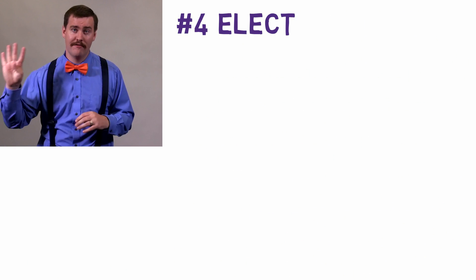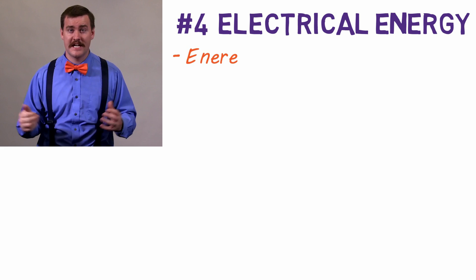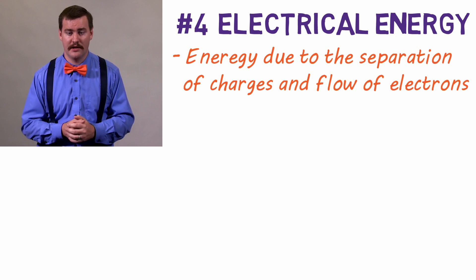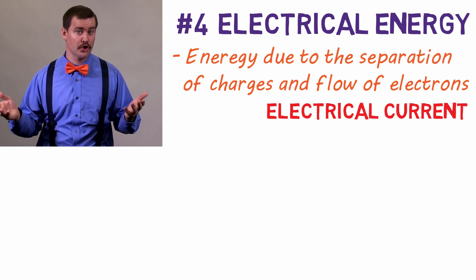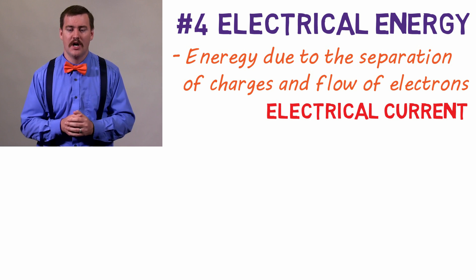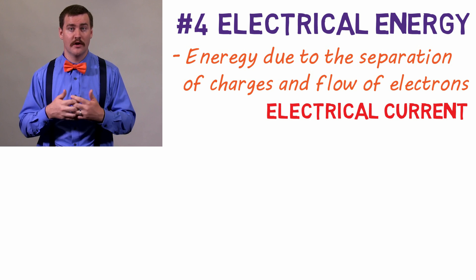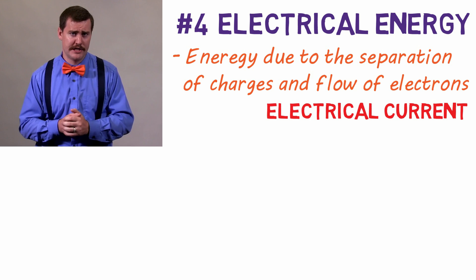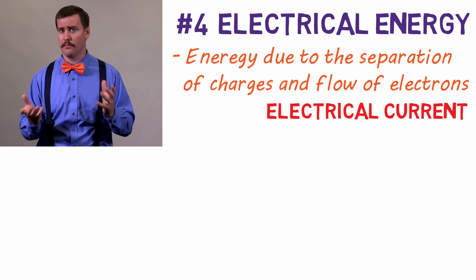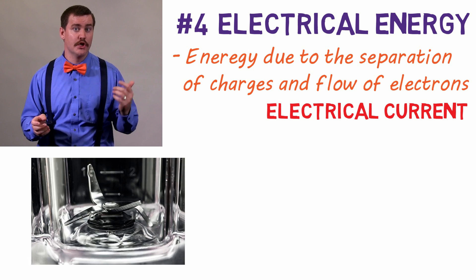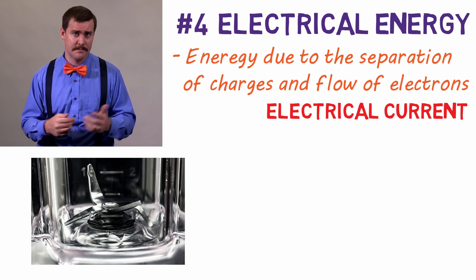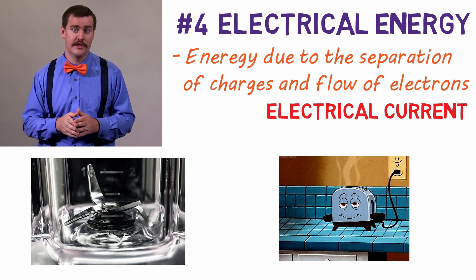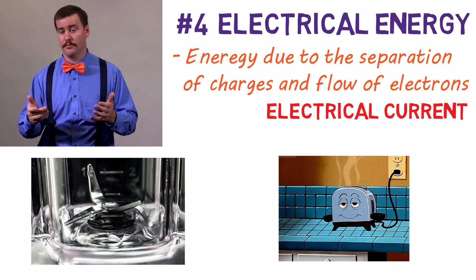Number four is electrical energy. This is the energy due to a separation of charges and flow of electrons, also called an electrical current. All your household appliances use electrical energy and convert it to some other type of energy. For example, your blender converts electrical energy to kinetic energy to spin the blades, and your toaster converts electrical energy to thermal energy to toast your bread.